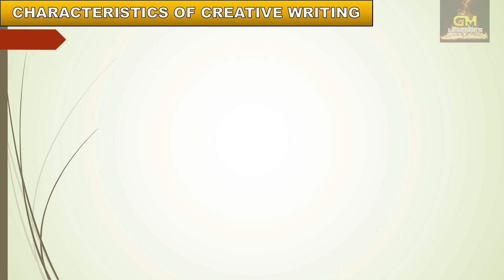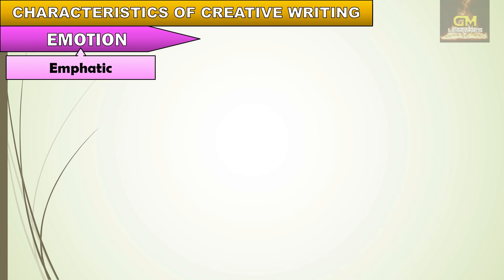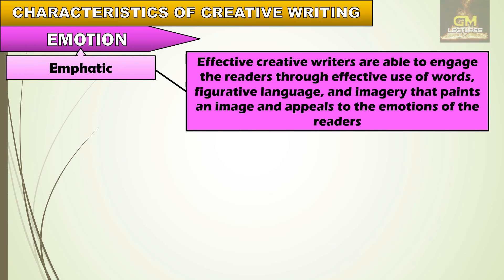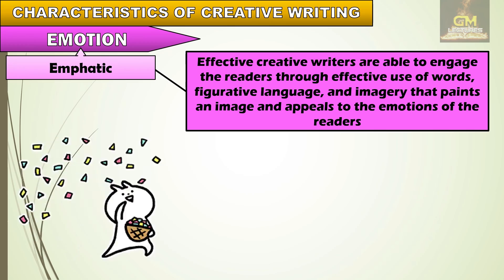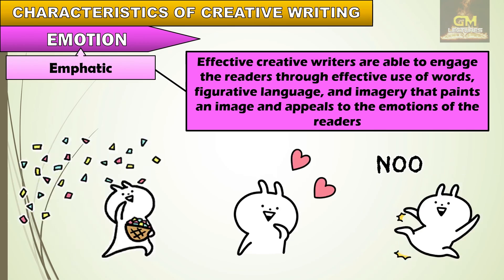Another characteristic of creative writing is that it always involves emotions, meaning that it aims to be emphatic. This means that effective creative writers are able to engage the readers through the effective use of words, figurative language, and imagery that paints an image and appeals to the emotions of the readers. In creative writing, we can write about any kind of emotion — whether it's being victorious, happy, feeling in love, or even feeling frustration.